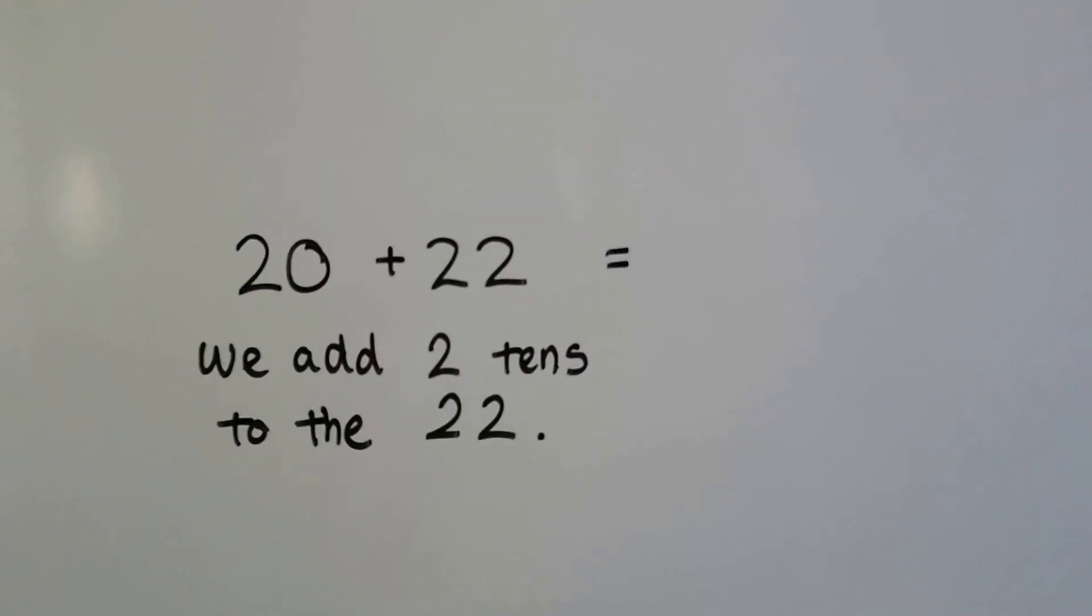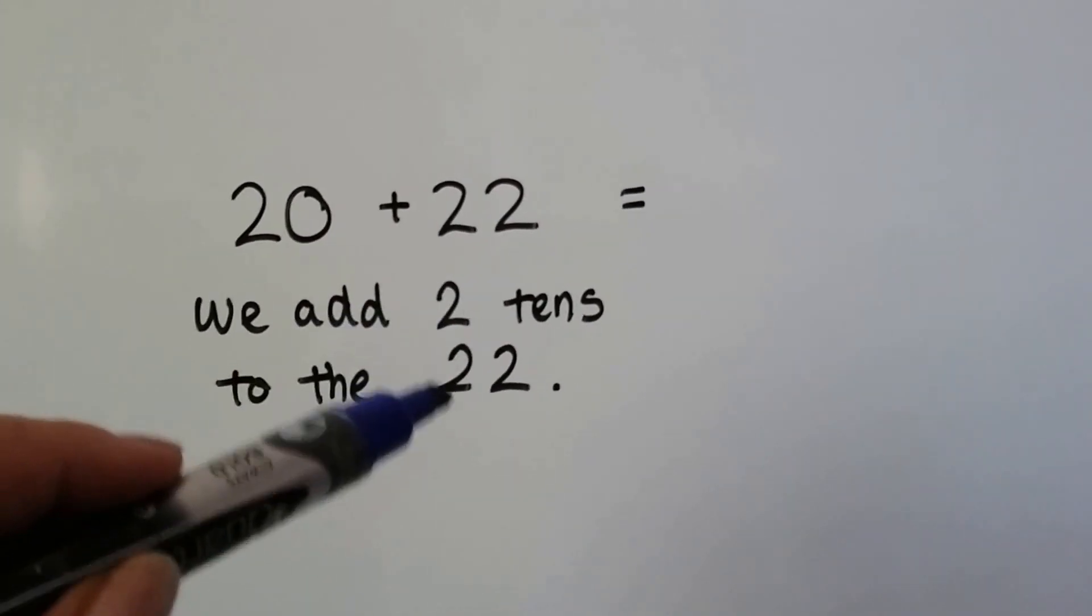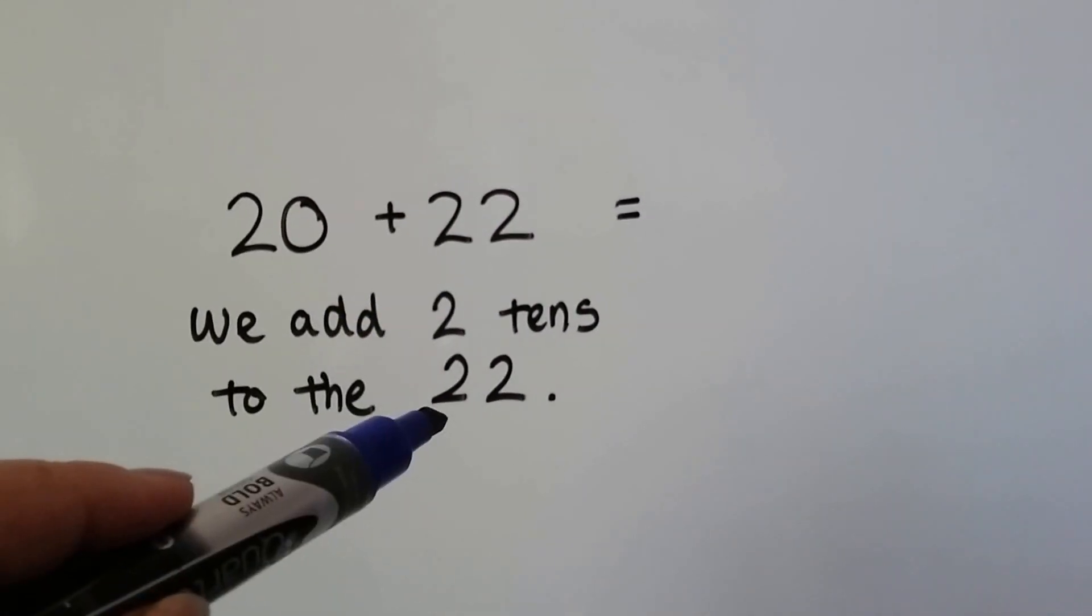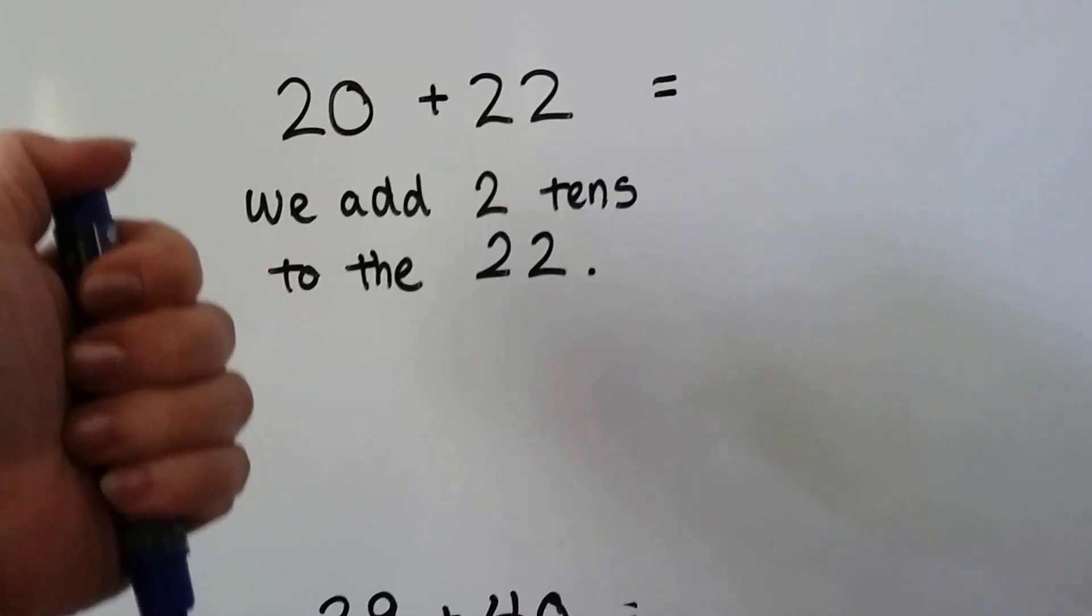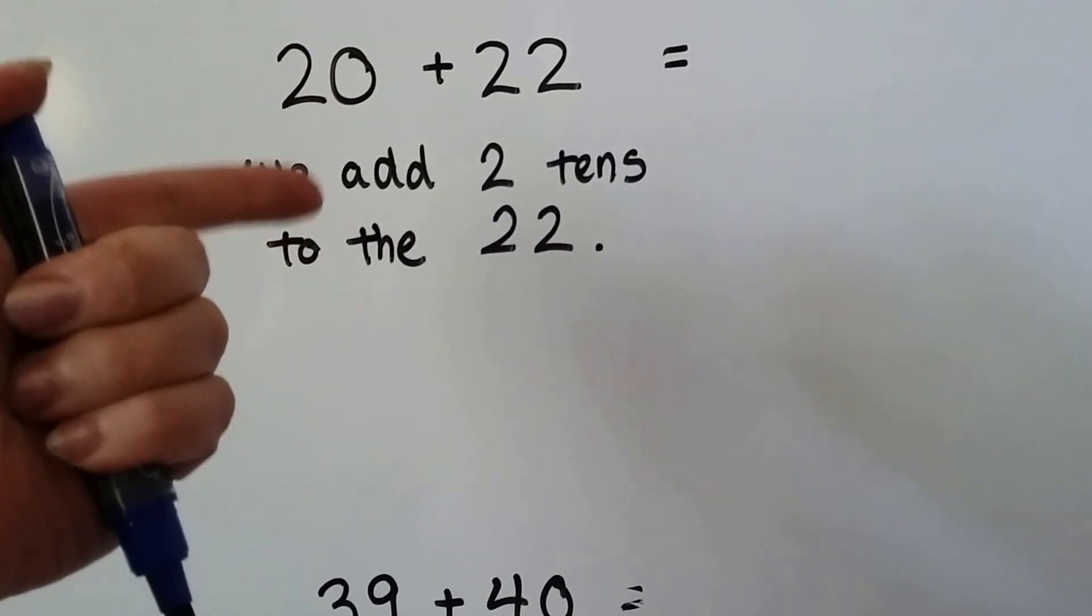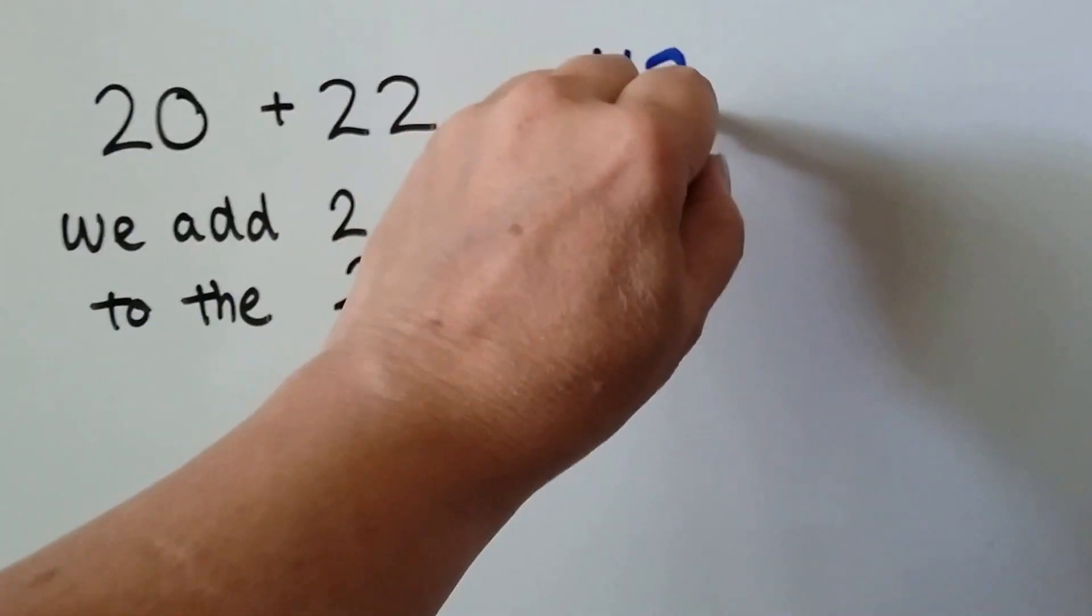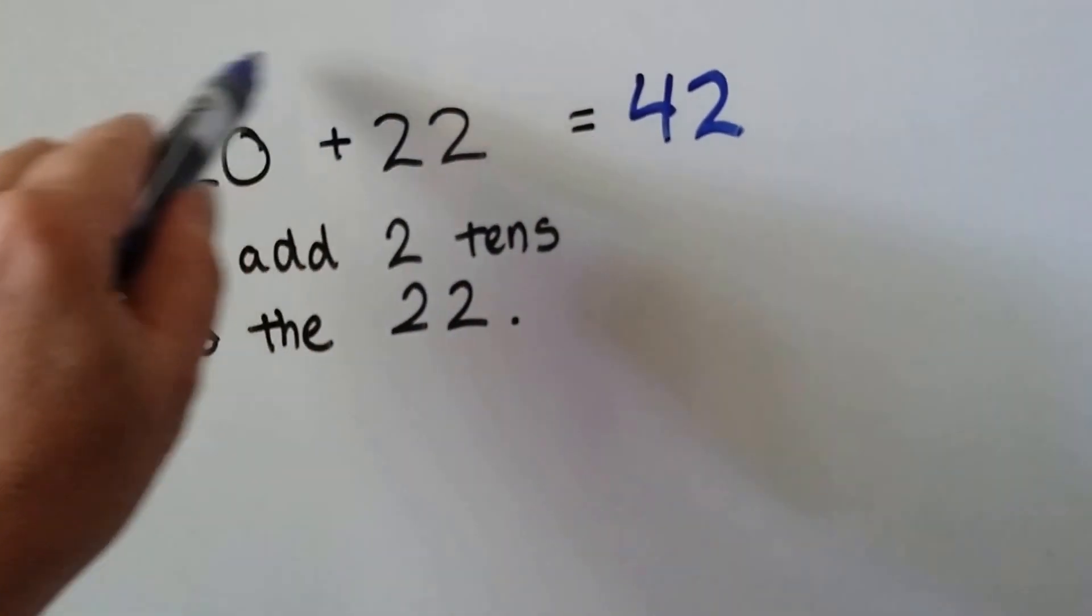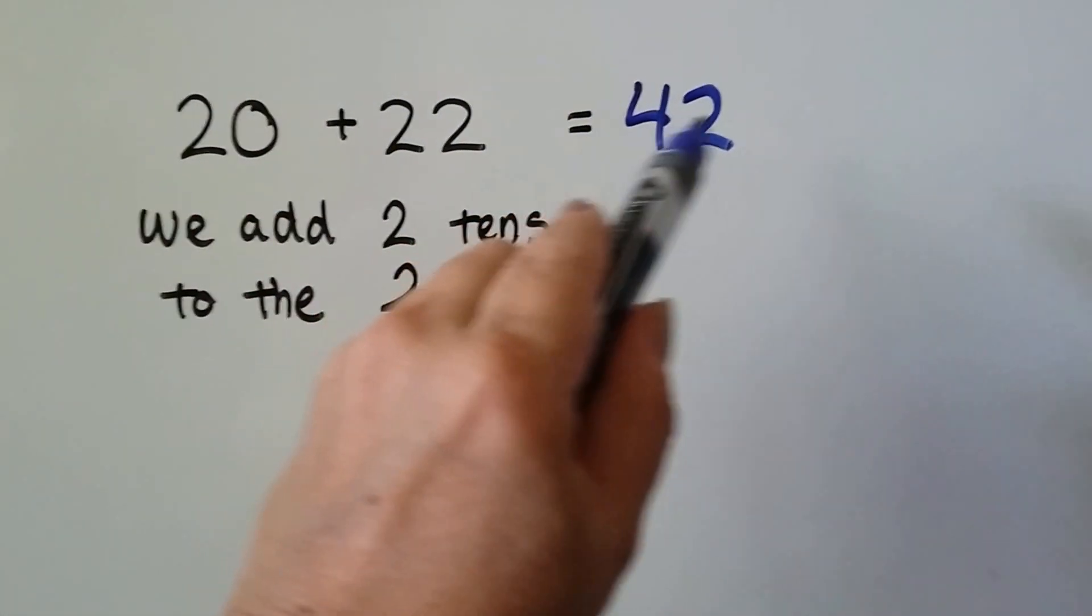20 plus 22. We add two tens to the 22. So we're going to add two tens to this tens place right here. We start with 22 and count it by tens. 32, 42. When we add two tens to this tens place, we end up with a 4, don't we? We get 42.